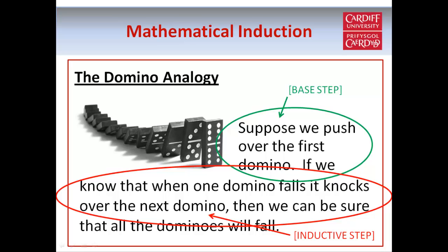So when we try to prove something by induction, it's a bit like trying to knock over an infinite line of dominoes. All we have to do is push the first domino, and then prove that when each domino falls, it knocks over the next domino, and then we can be sure that every domino in the line will eventually fall over. We'll see you next time.